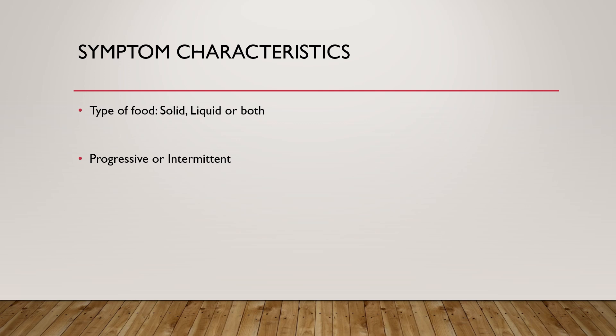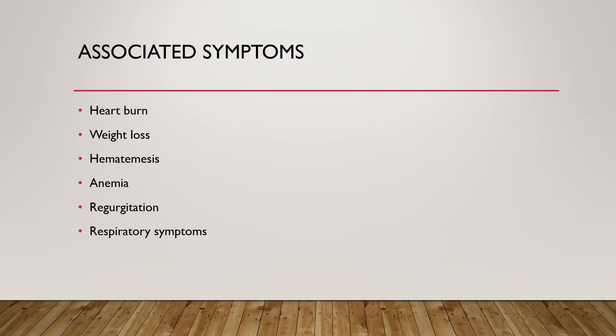Progressive dysphagia is usually due to peptic strictures or obstructing lesions that are increasing in size — the patient starts with dysphagia to solids and it progressively involves liquids. Intermittent dysphagia is usually due to esophageal webs and rings. We will cover other causes in the coming slides.